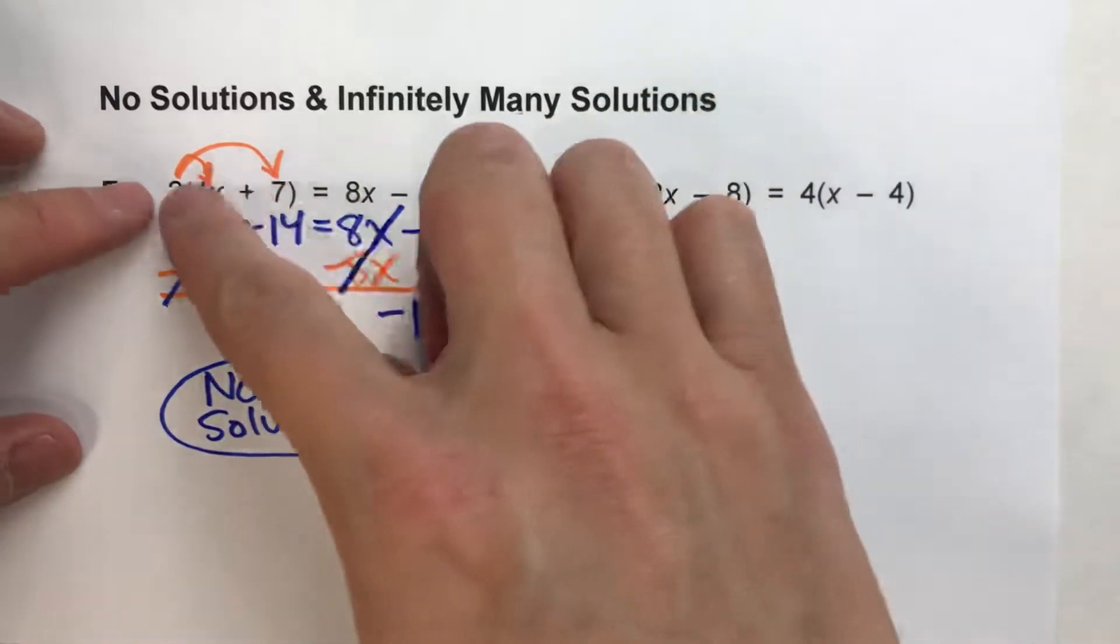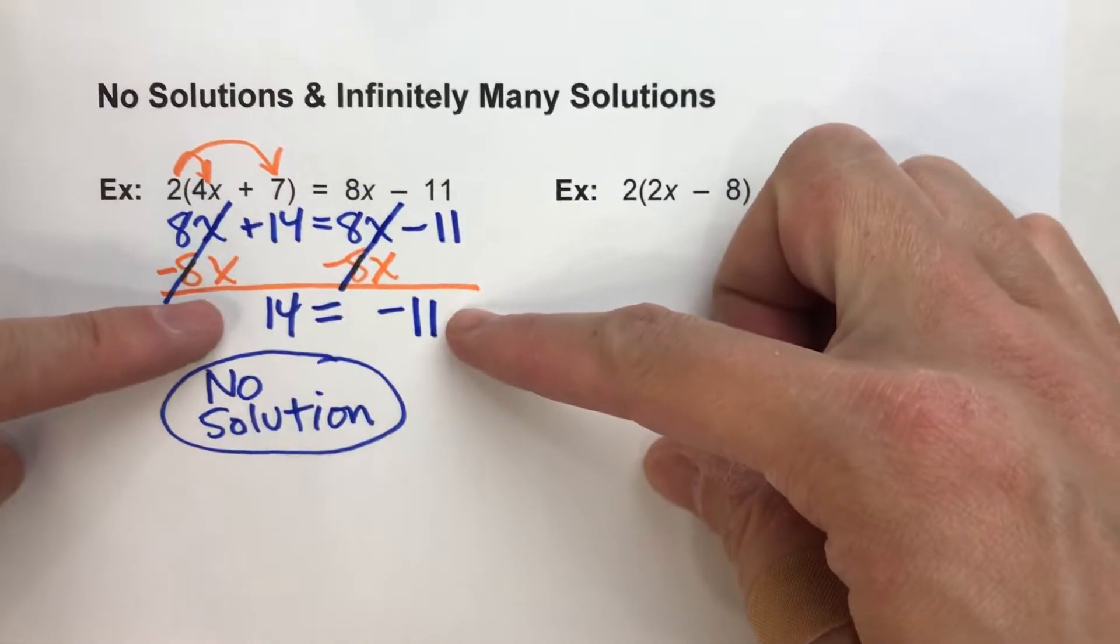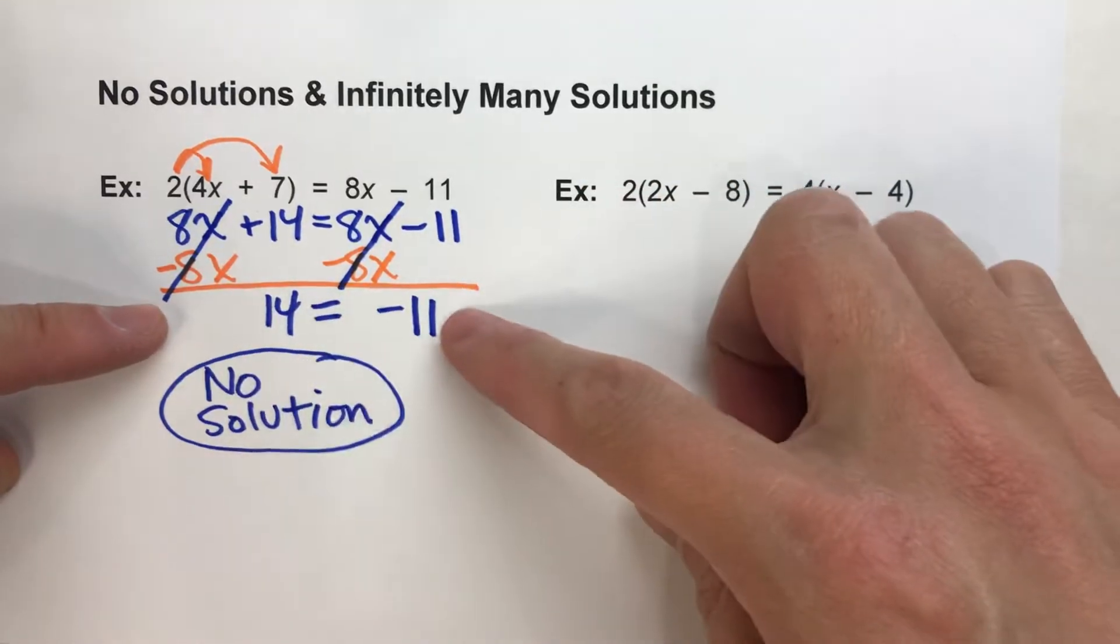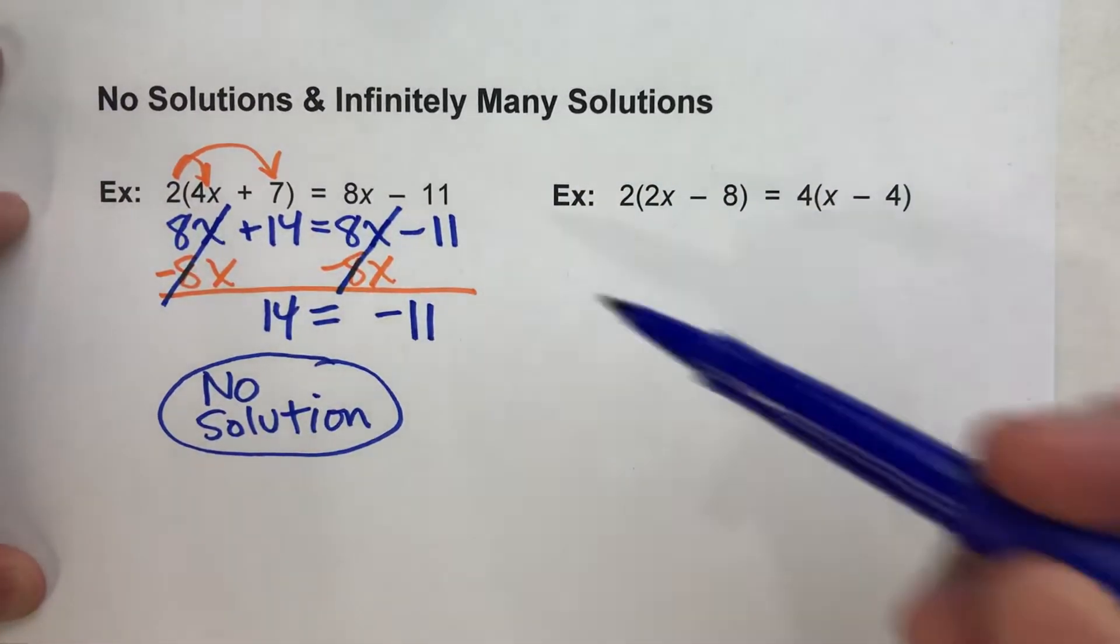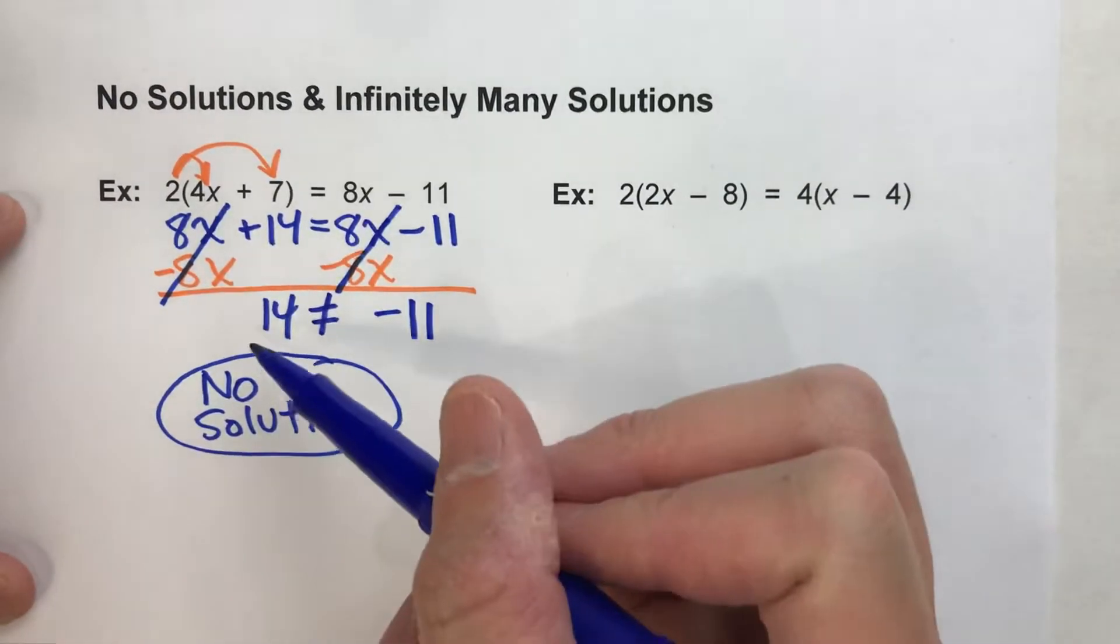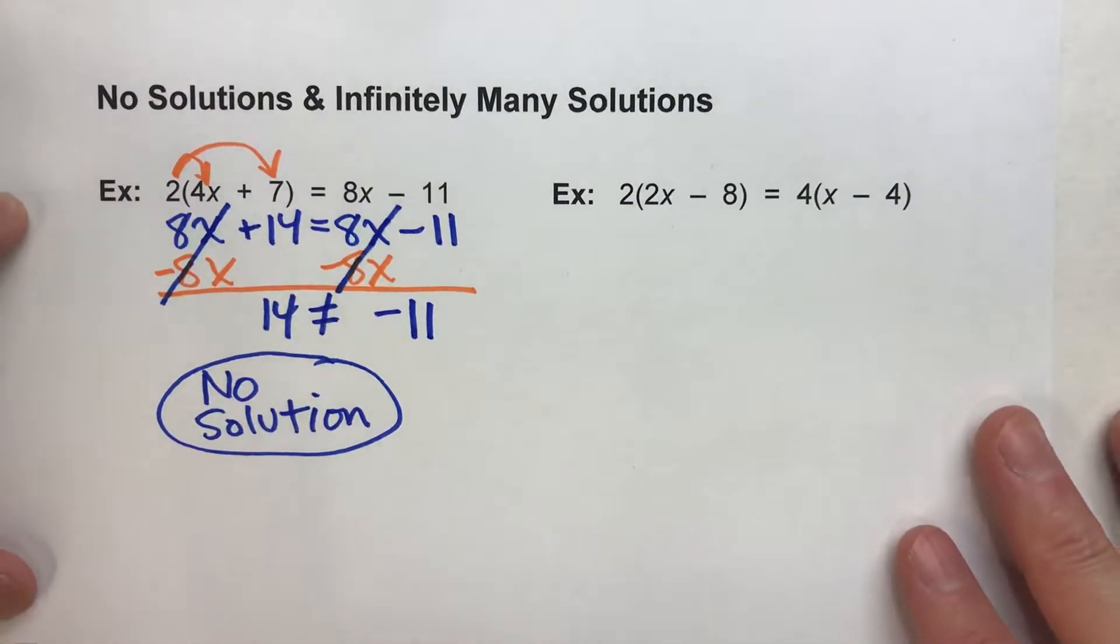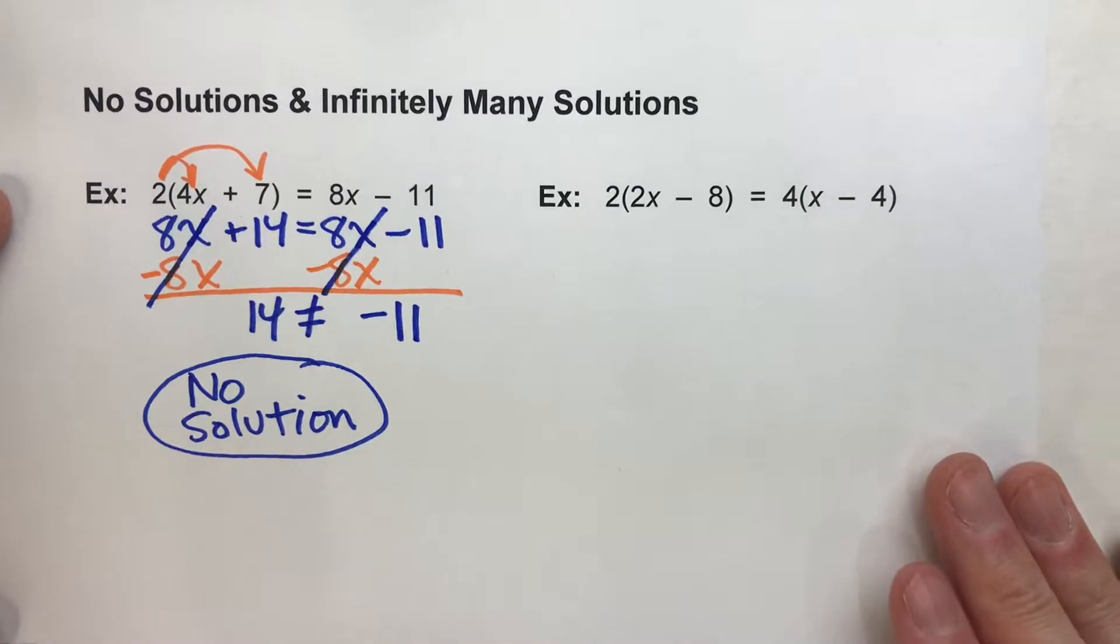And the reason we know that is because once we started solving, we got to a point where there was no x's in the equations and we had a number equal to something that it clearly is not equal to. We come to a contradictory situation. So there's no possible solution.